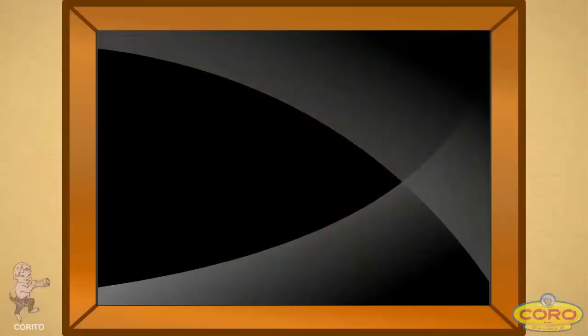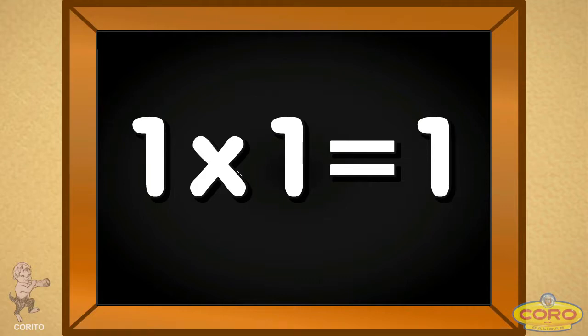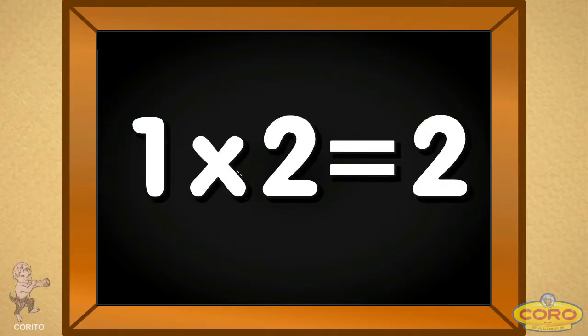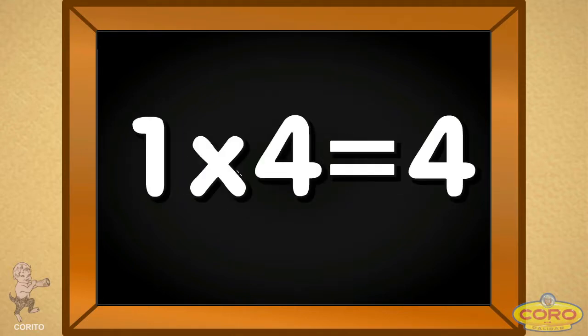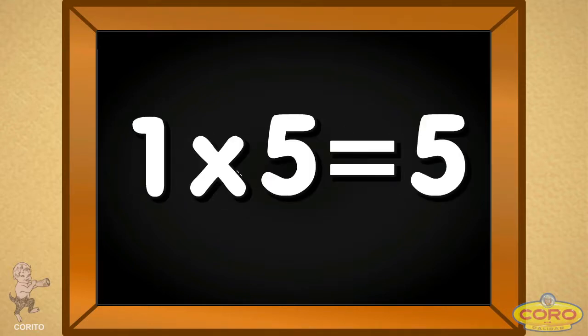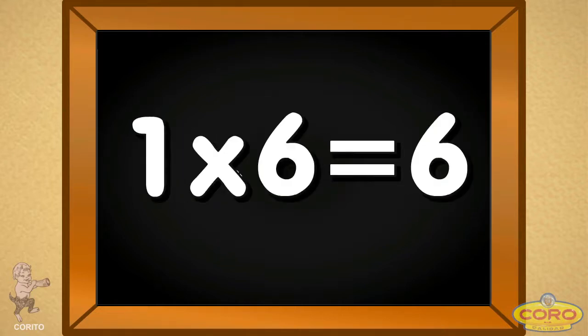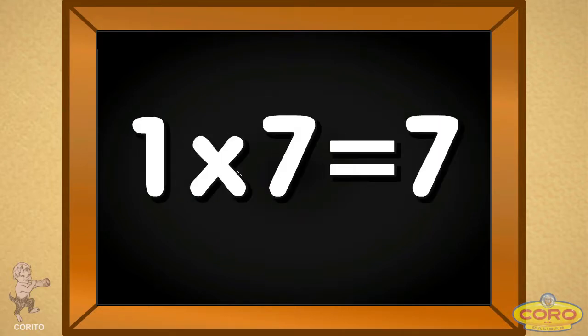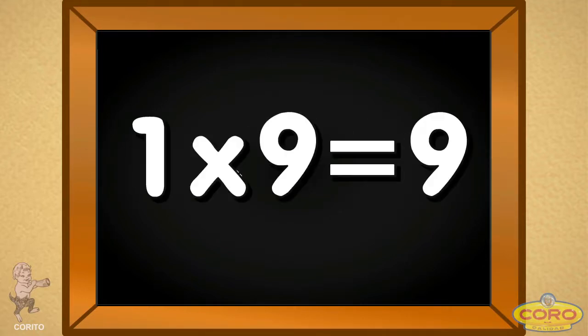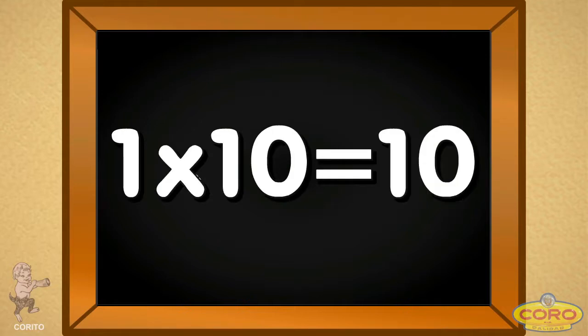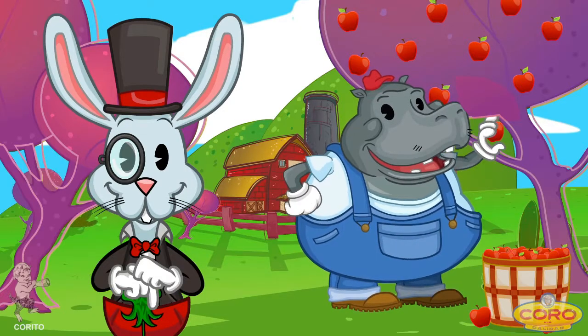The first table that we're going to study is the table of one, and we'll study it without music. Okay, friends, say it with me. One times one, one. One times two, two. One times three, three. One times four, four. One times five, five. One times six, six. One times seven, seven. One times eight, eight. One times nine, nine. And one times ten is ten. Very good.